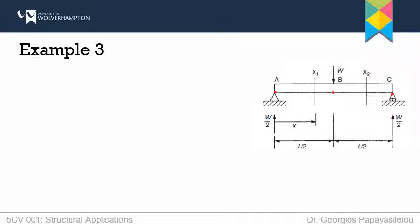The first step as always would be to draw the support reactions. Here you can see the support reactions drawn and calculated, but of course we will be calculating them ourselves anyway. Typically I start with the sum of moments, except for cantilever beams, because this is the easiest way to directly calculate one unknown variable — one support reaction in this case.